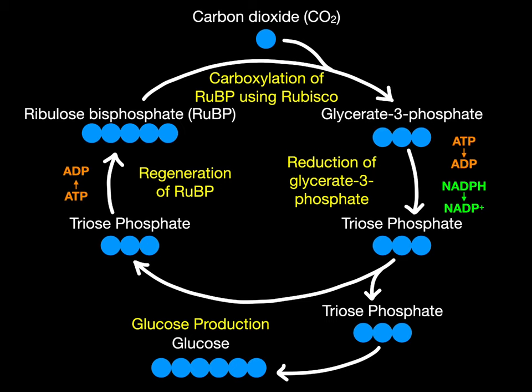At this point you might have noticed the carbons are unbalanced, as you have a five carbon RUBP joining with one carbon to make a three carbon glycerate three phosphate. With the blue circles representing the carbons, I'll now repeat the Calvin cycle using coefficients to balance the carbons.